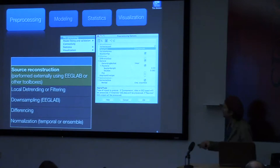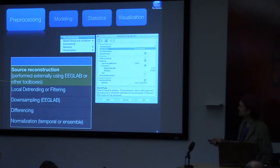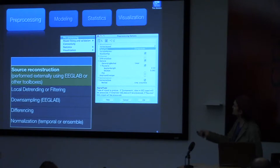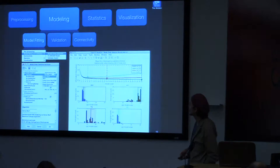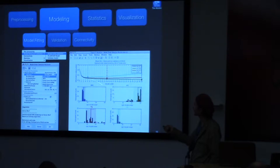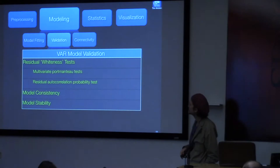The pre-processing routines include techniques like detrending, downsampling, differencing, and normalizing, all accessible through a GUI. For modeling, there are different ways to fit your models to the data — probabilistically constrained or unconstrained approaches — and you can select things like optimal model orders through the GUI interface.